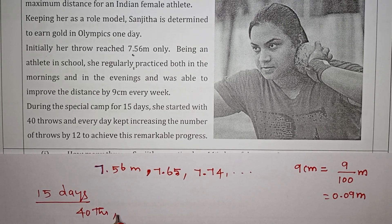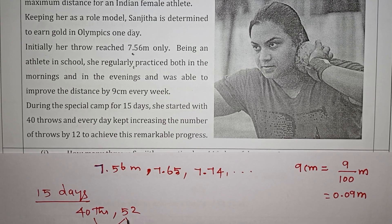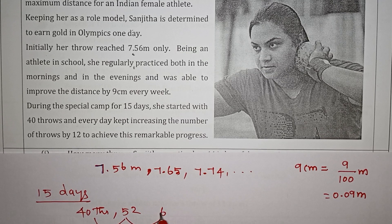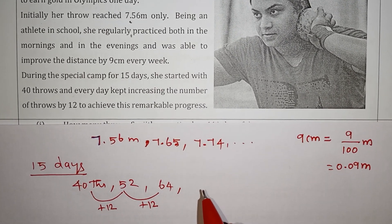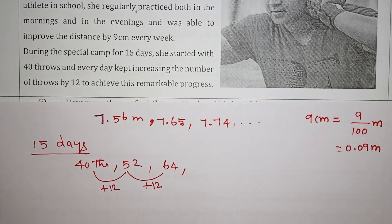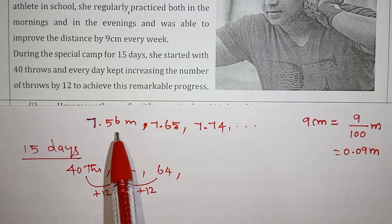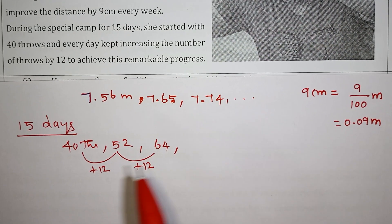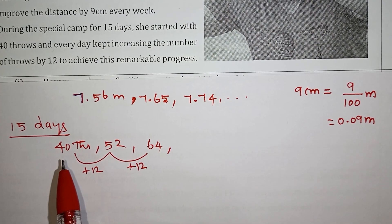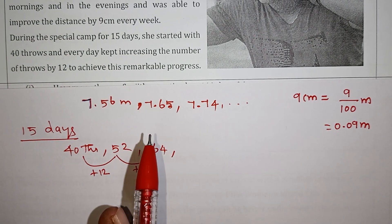First day: 40 throws. Next day: 52. Next: 64. Keep increasing the number of throws by 12 over 15 days. So we have two APs here: one for the usual practice distance, and one for the number of throws in the camp. For the camp AP: number of throws is the second AP, and distance is the first AP.